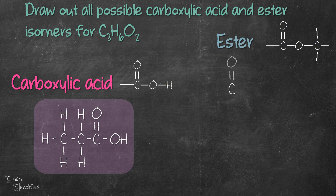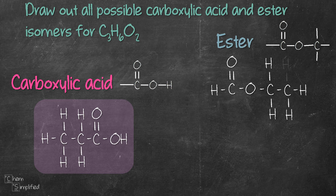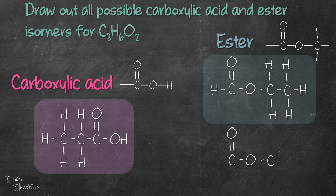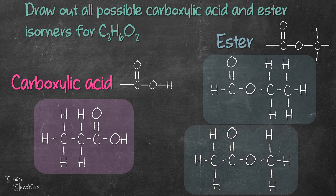Ester has that COOC functional group. Let's place the third carbon here. Since we've used up the carbon and oxygen, let's fill in the rest of the bonds on carbon with hydrogens. Now let's try to see if we can place the third carbon elsewhere. Instead of placing it at the end, we can place it at the front, which gives us another isomer. We'll complete the structure by filling out with hydrogens. So we have a total of three isomers for C3H6O2.